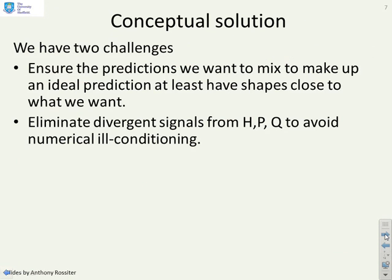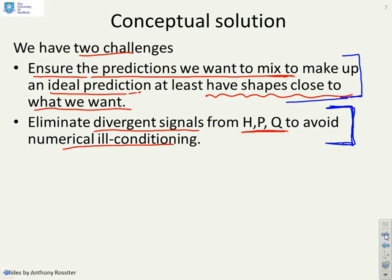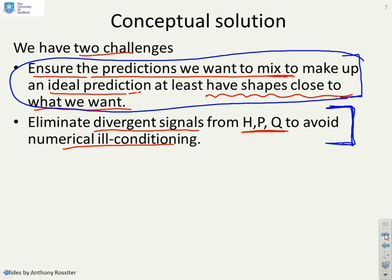The conceptual solution addresses two challenges: first, ensure that the predictions being mixed have shapes close to what we want — otherwise you're asking the optimisation to do an awfully difficult task. Second, eliminate divergent signals from H, P, and Q to avoid numerical ill-conditioning. The first challenge is actually the more important one in the modern literature.